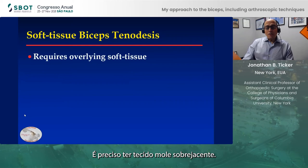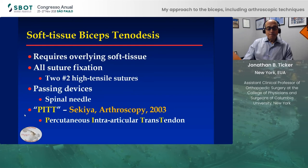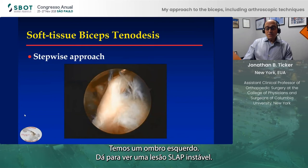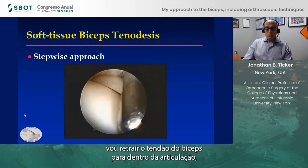Soft tissue tenodesis can be used — it requires overlying soft tissue. I use two high tensile sutures and usually a spinal needle for passing. This was described by Sakia and colleagues as the Pitt technique, as they're from Pittsburgh. This is a stepwise approach on a left shoulder. You can see the unstable SLAP tear, and there's also subscapularis pathology affecting the biceps. After repairing the subscapularis, I'll retract the biceps tendon into the joint.